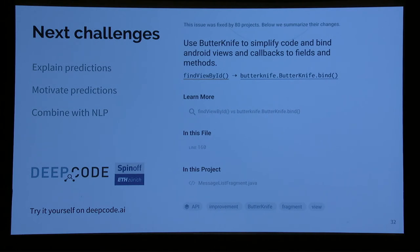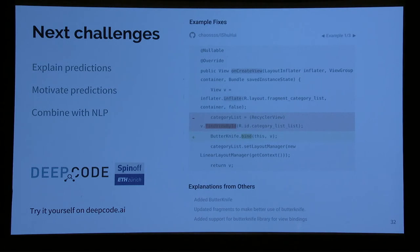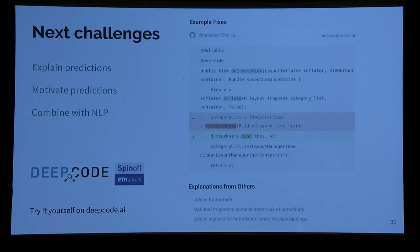We look at commits and find rules. Here is an example of a rule fixed by 80 projects: if you use Android's FindViewById, that's probably not the best way to do it. There are libraries that wrap this behavior into attributes — you just say butterknife.bind and don't have to write that code at all. In commits, you can see that in onCreateView, instead of inflating and finding views by ID, you just call butterknife.bind and everything works. The commit messages say 'added butterknife', 'updated fragments', 'added support for butterknife' — this somewhat motivates the change, although it doesn't explain what the issue with the previous code was.